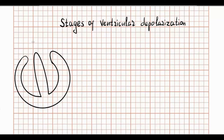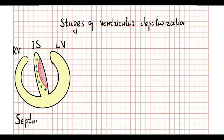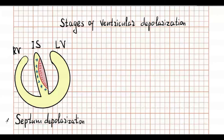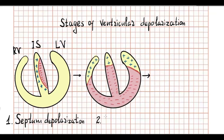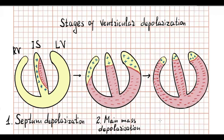Ventricular depolarization has three stages. The first one is depolarization of the interventricular septum. The second one is depolarization of the main mass of ventricles. And the last one is depolarization of the basal parts of ventricles and interventricular septum.